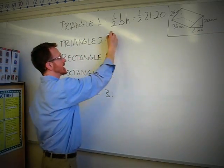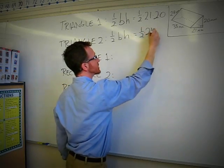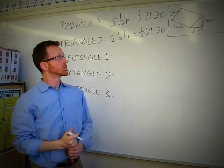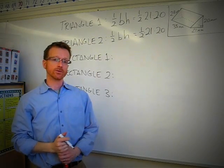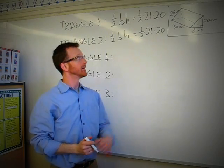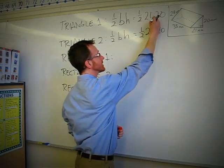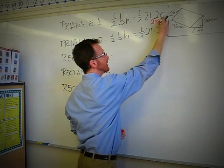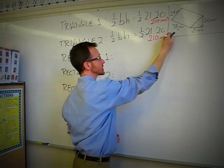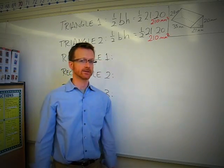Same thing occurs down here. One-half base times height. One-half times 21 times 20. So 21 times 20 is 420. Half of that is 210. I'm going to have 210 here, millimeters squared. I'm going to have 210 here, millimeters squared. And so far I have two of my sides completed.